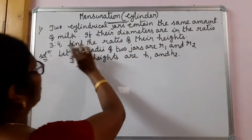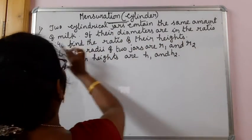Then what is given, they contain the same amount of milk. If the diameters are in the ratio 3 is to 4 given.